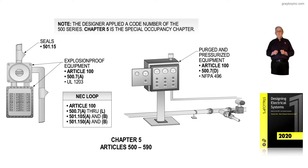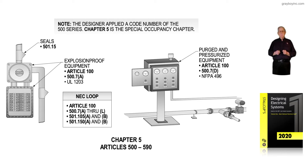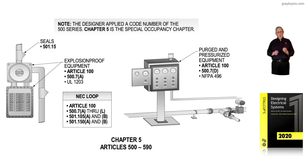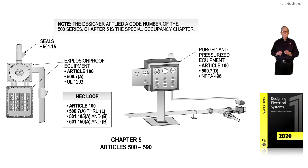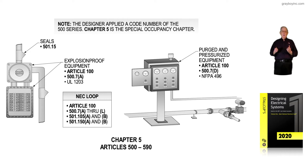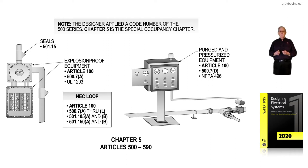This illustration deals with Chapter 5, Articles 500 through 590. We have reviewed Chapter 1 (the 100 series), Chapter 2 (the 200 series), Chapter 3 (the 300 series), and Chapter 4 (the 400 series). Now we're reviewing Chapter 5, the 500 series, and we're focusing on hazardous locations with our illustration.